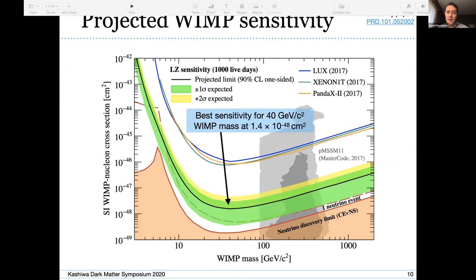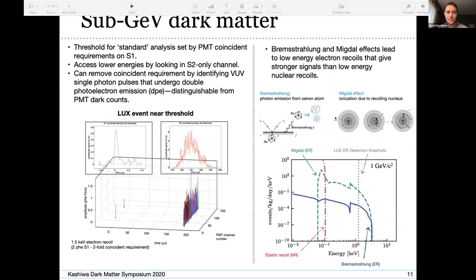This is our projected WIMP sensitivity. We have the best sensitivity at 40 GeV, 1.4 times 10 to the minus 48 cm squared. Very much similar to XENONnT sensitivity. Both of those experiments are going to push us towards the neutrino floor in this WIMP phase space. We can also try to look for low mass dark matter. You'll notice on the previous slide how the cross section sensitivity goes up at low masses.